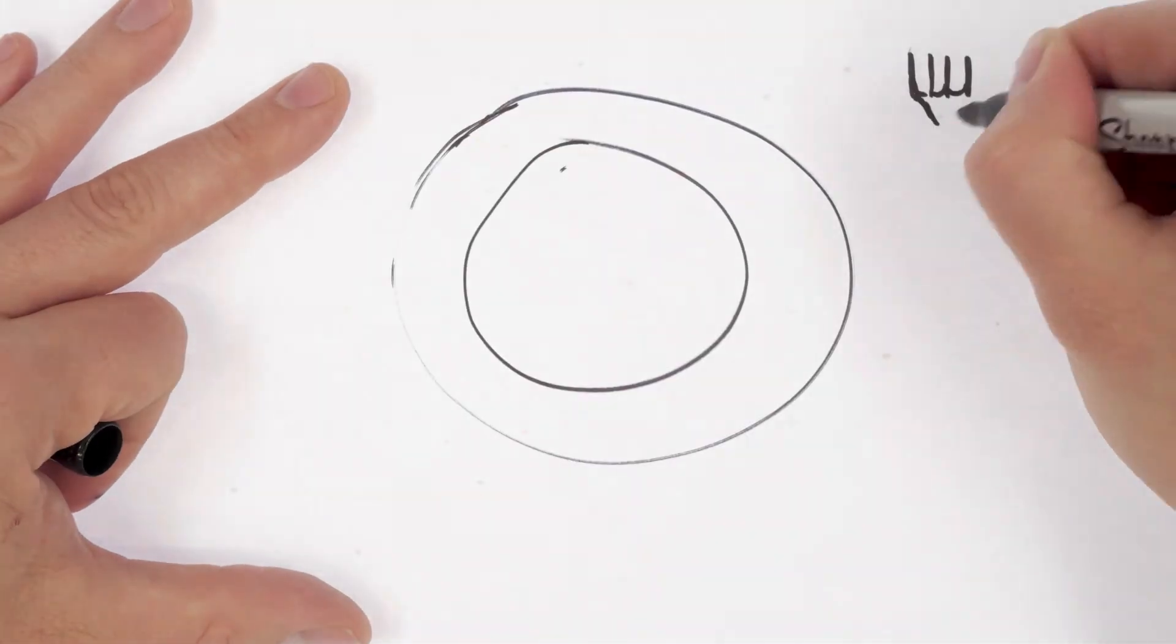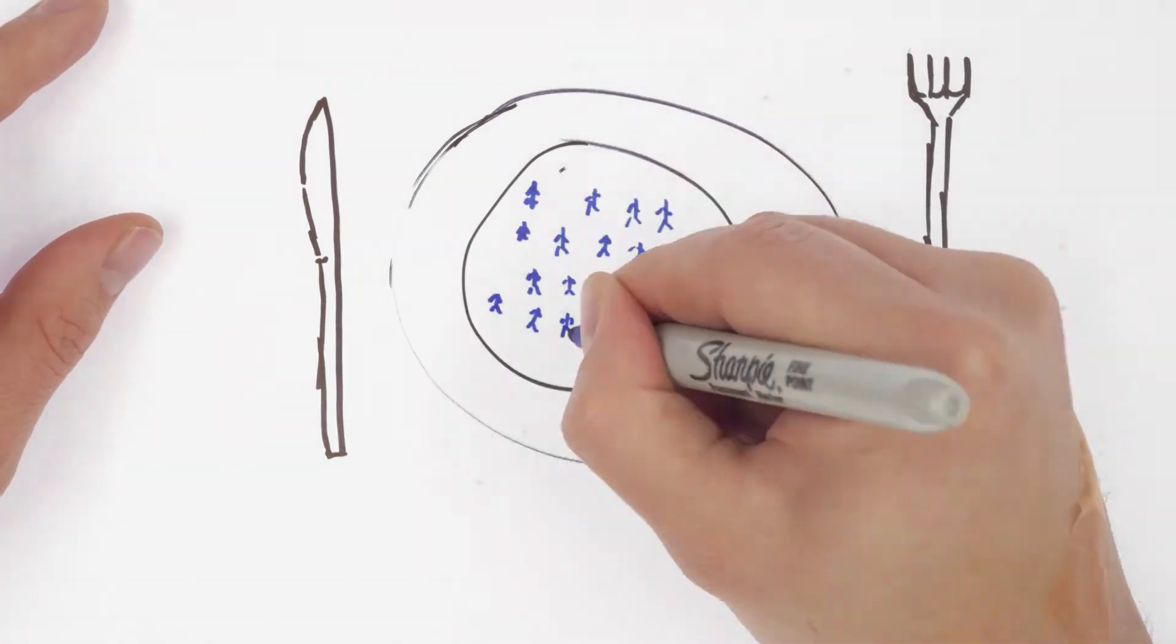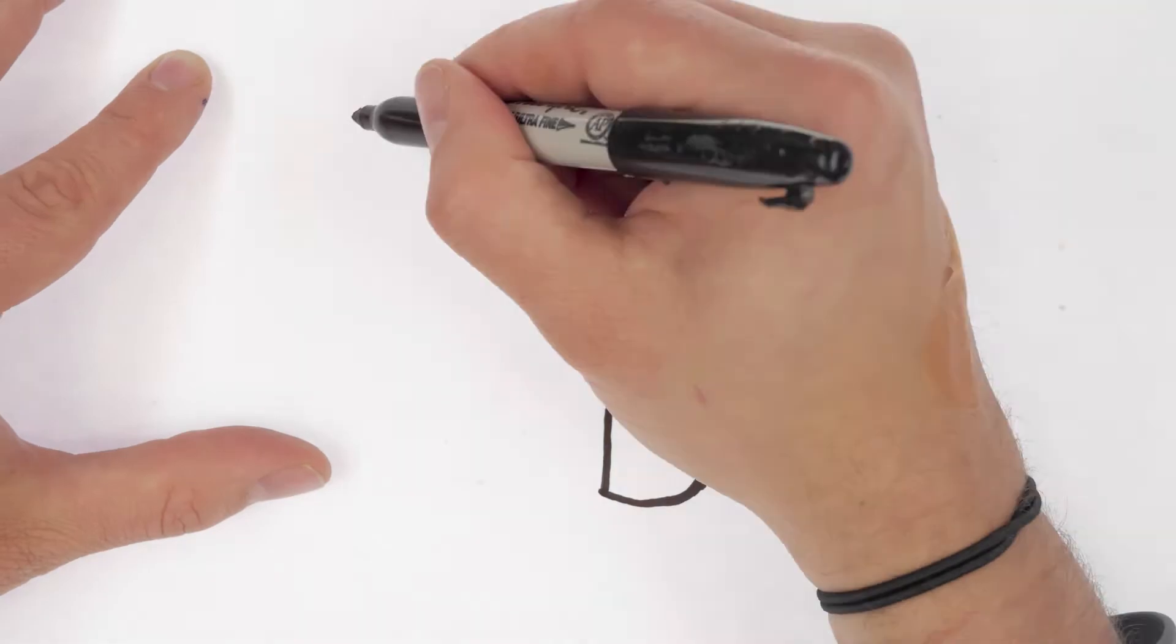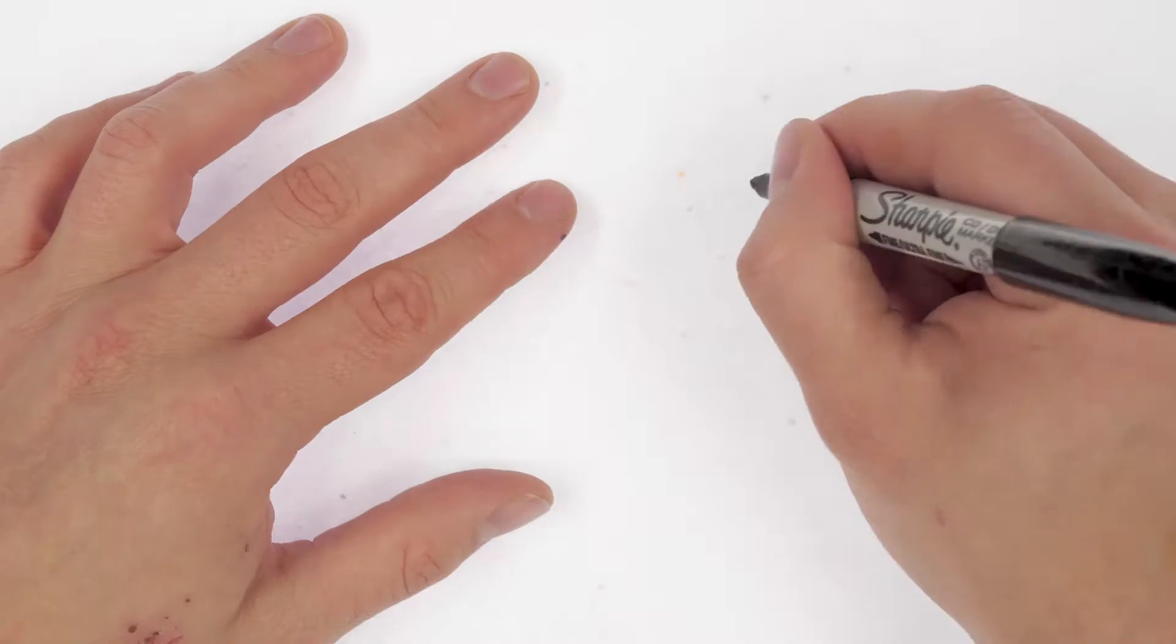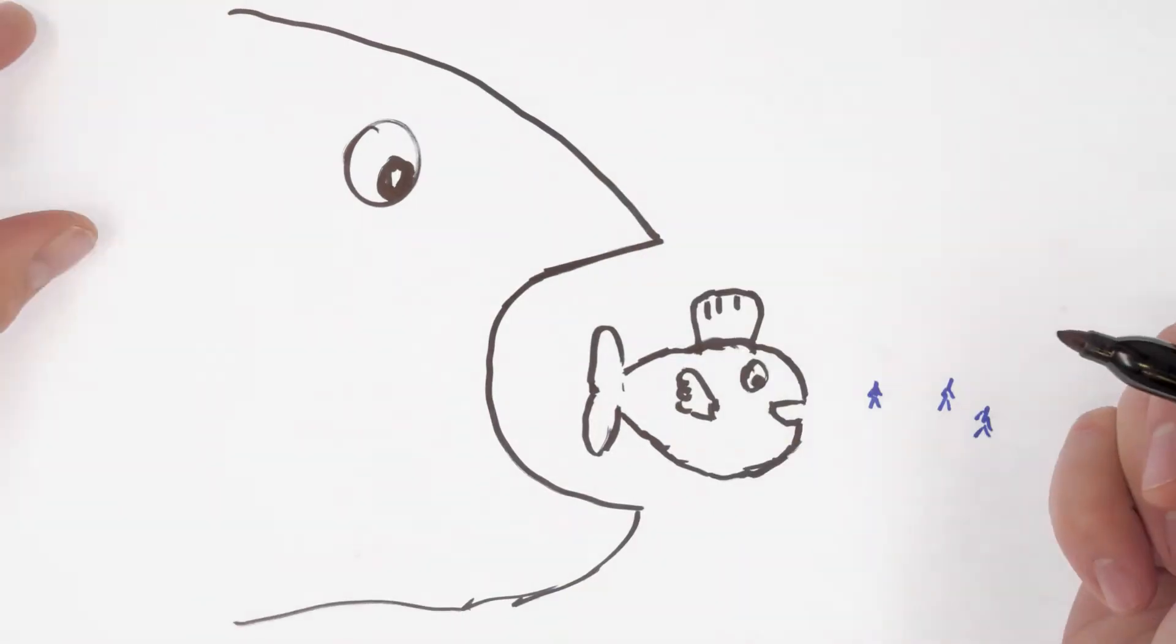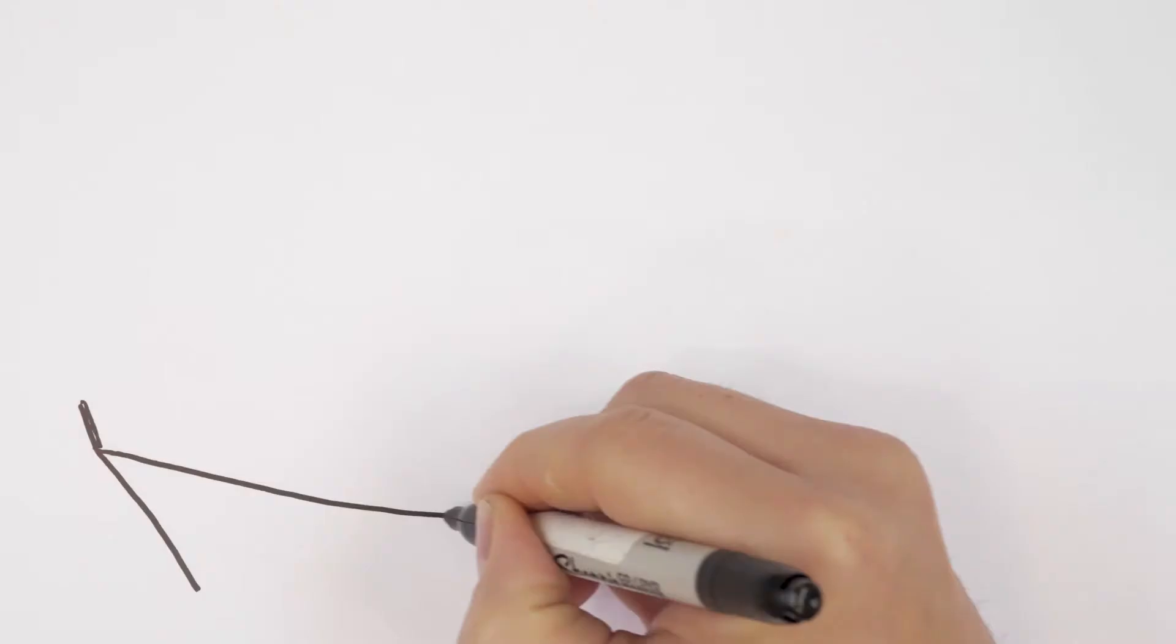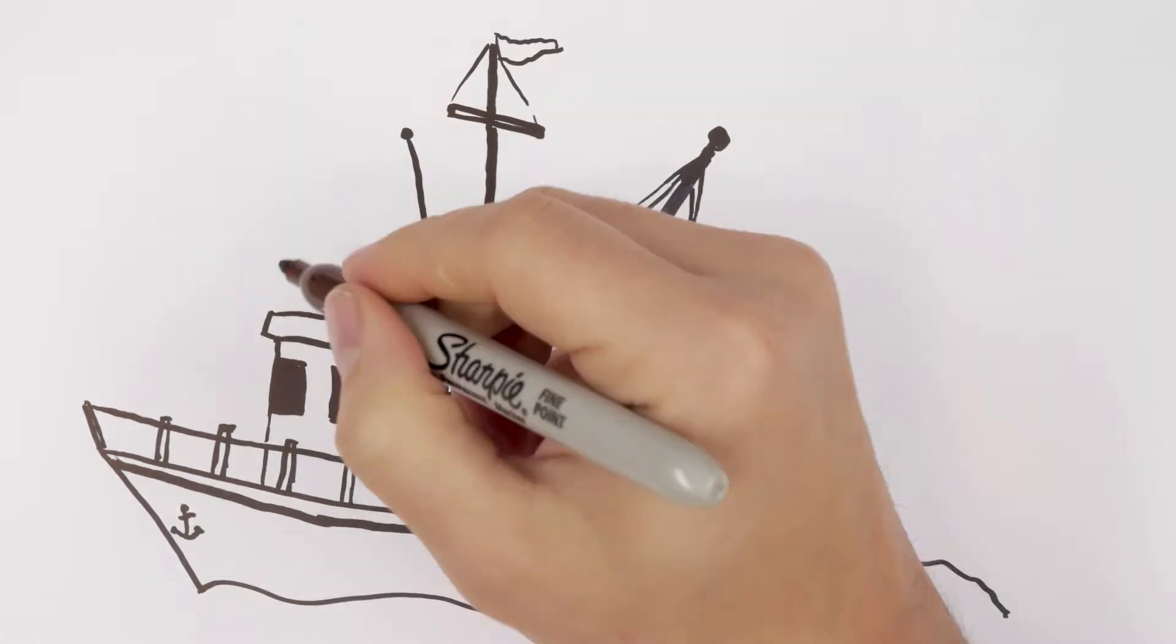But where does all this plastic end up? Well, there is evidence to suggest that at least some of it may be entering the food chain. This is because repeated sun exposure causes plastic to become brittle, catalyzing its breakdown into ever smaller fragments. These then get consumed by small fish, which get eaten by bigger fish, which then get eaten by us. Indeed, a third of fish caught off the coast of England contain traces of plastic.